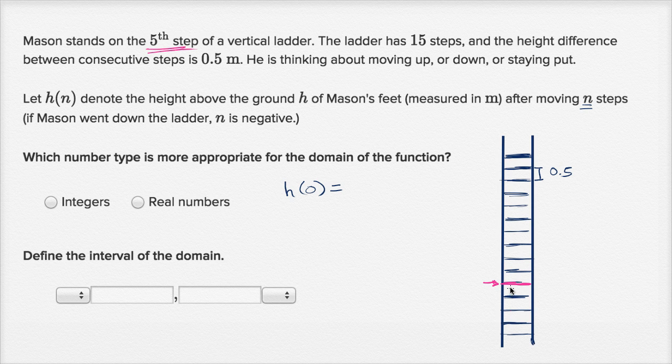If he's moved zero steps, he's still going to be on this fifth step of the ladder. And so how high is he going to be? So if he's on the fifth step of a vertical ladder, I'm assuming that there's 0.5 from the ground. So this is the ground right over here. So he is one, two, three, four, five steps. Each of them is half a meter. So five times 0.5 is going to give us 2.5 meters.